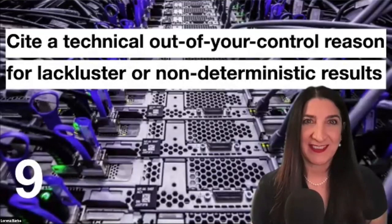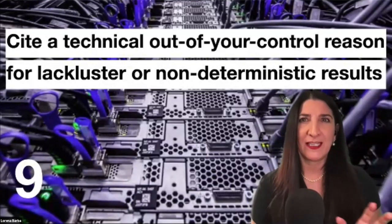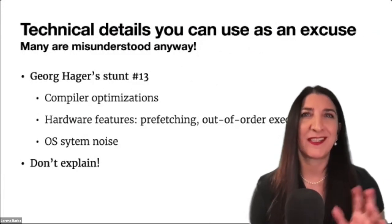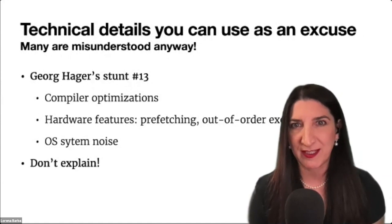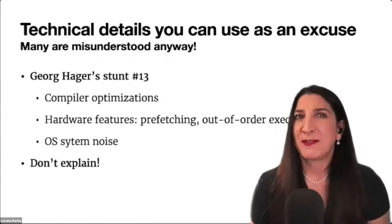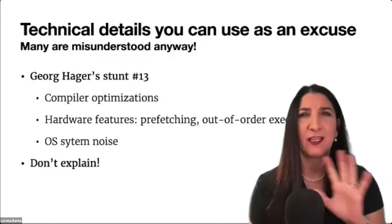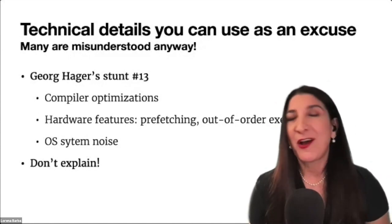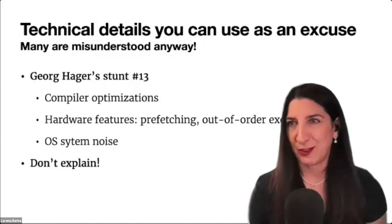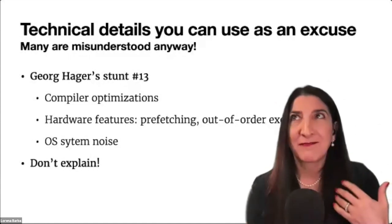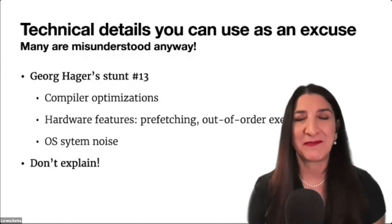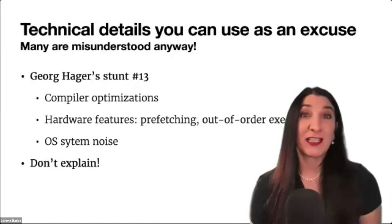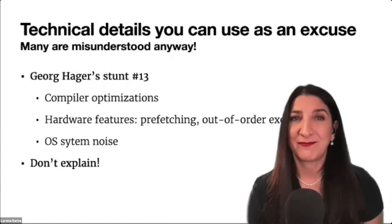Next: cite some technical out-of-your-control reason for any lackluster or non-deterministic results. This is George Hager's stunt number 13. The mysterious reasons you can give for unexplained discrepancies include compiler optimization capabilities, prefetching, out-of-order execution, other hardware features, unexplained cache misses, or even the kicker — bank conflicts, OS noise, jitter. Don't attempt to actually confirm and explain the observation. Just name something completely misunderstood by your readers and they'll plow through. With a long list of these obscure reasons, you can speculatively cite behavior you cannot explain. The results will be harder to interpret and impossible to reproduce.